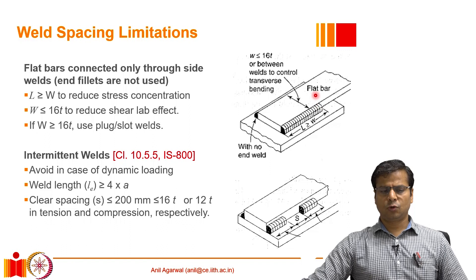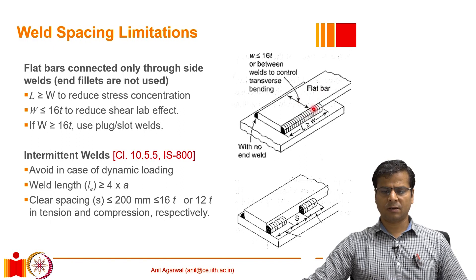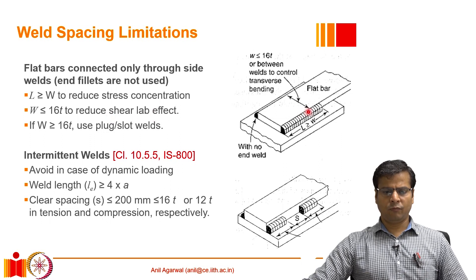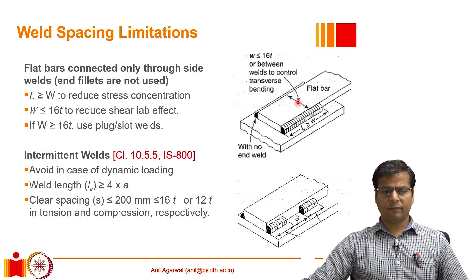The width of the plate governs the spacing of the two fillets resisting the load. This is required to reduce stress concentration — if the weld is very small in comparison to the width, the edges of the weld will be under very high stress. Therefore, at least a certain length of weld is provided so that stress concentration at the edges can be minimized. In addition, the width of such a plate being resisted through fillet welds only at the ends should not be greater than 16 times the thickness of the plate.